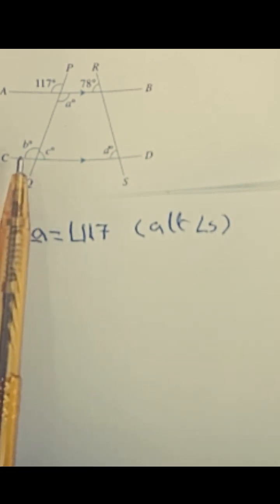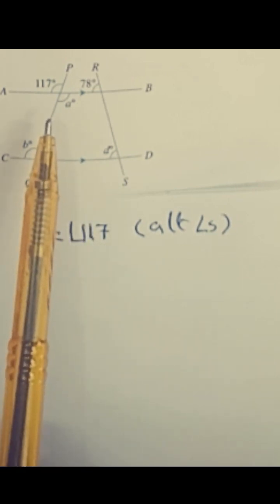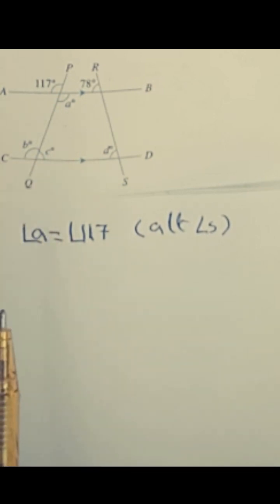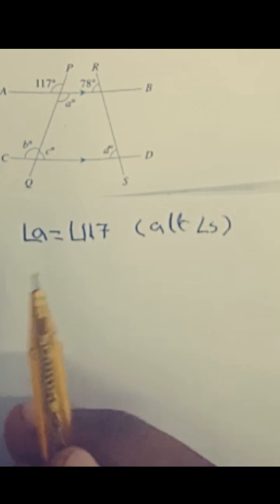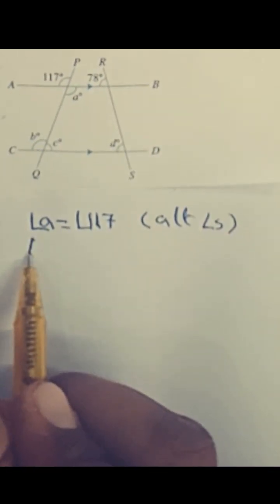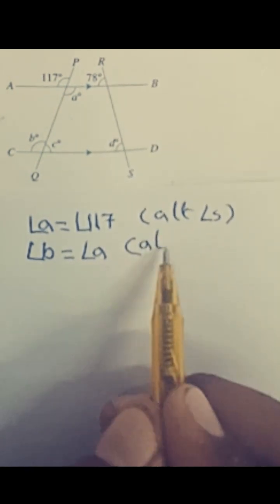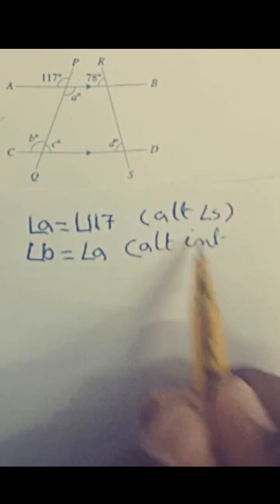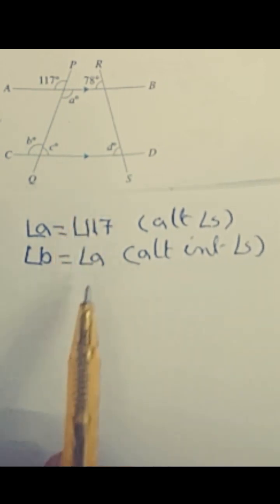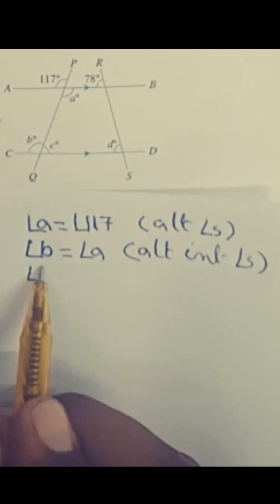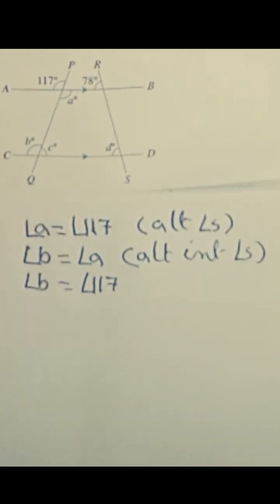Now we have to find the value of angle b. The four angles on this transversal are interior angles. Counting in sequence — 1, 2, 3, and 4 — as per the property of alternate angles, a and b are alternate interior angles. Therefore, angle b is equal to angle a, which is 117°.